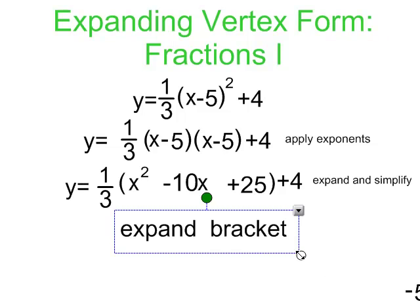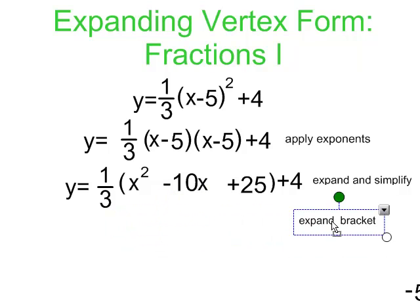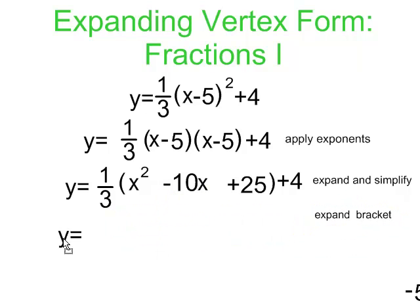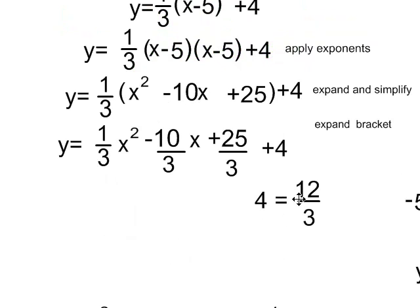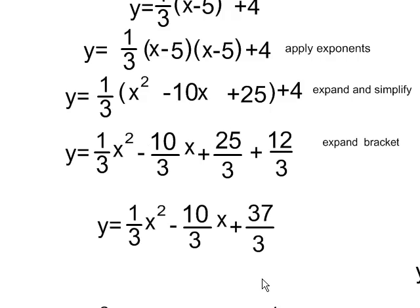And so we're at the place where we can expand the bracket and apply our fraction. And so this becomes y equals, and one-third times x squared is one-third x squared, and one-third times negative 10x is negative 10-thirds x, and one-third times 25 is 25-thirds, and I'm going to add 4 at the end. But I do know that 4 is equal to 12-thirds, and so just turning it into something with a common denominator with 25-thirds, so that I can add them, I end up with y equals one-third x squared minus 10-thirds x plus...